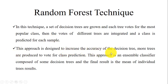In this approach we increase the accuracy of the decision tree by producing more trees to vote for class prediction. This approach is basically an ensemble classifier composed of multiple decision trees, and the final result is the mean of individual trees' results. That means the average accuracy of each and every tree corresponds to the accuracy of that particular algorithm.